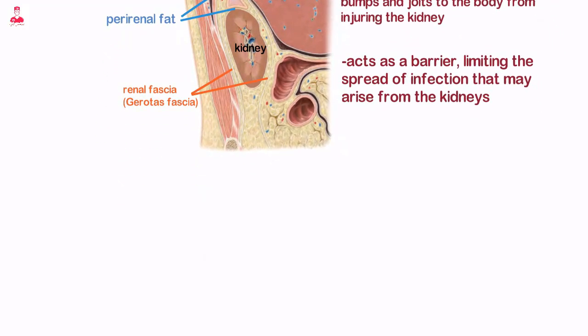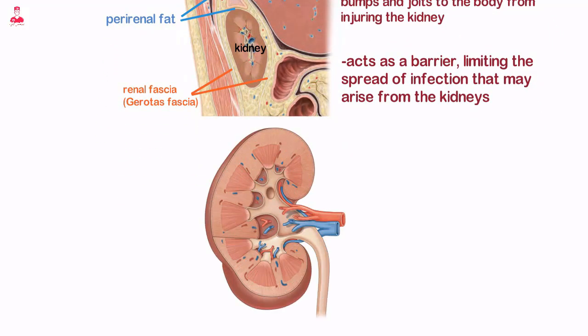The medial indentation in the kidney is called the hilum. It allows the renal artery and vein and ureters to enter and exit.